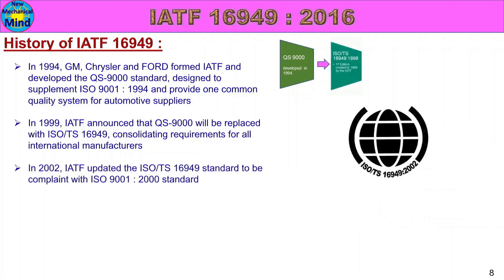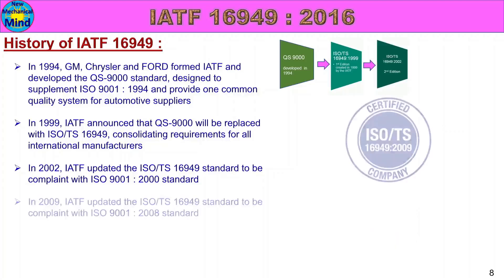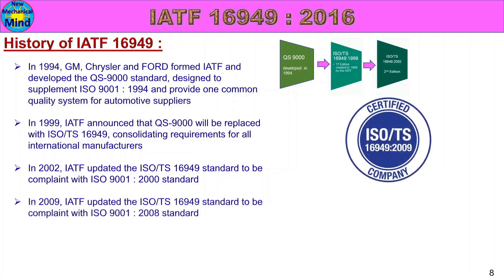In 2002, IATF updated the ISO TS 16949 standard to be compliant with ISO 9001:2000 standards. In 2000, ISO 9001 was revised, so IATF revised ISO TS 16949 accordingly in 2002. In 2009, IATF updated the ISO TS 16949 standard again to be compliant with ISO 9001:2008. The ISO TS 16949 second revision was published in 2009.